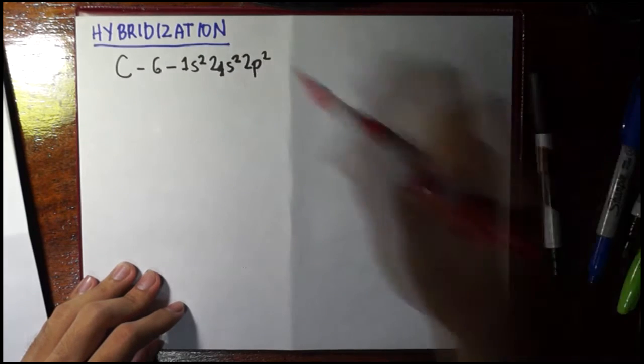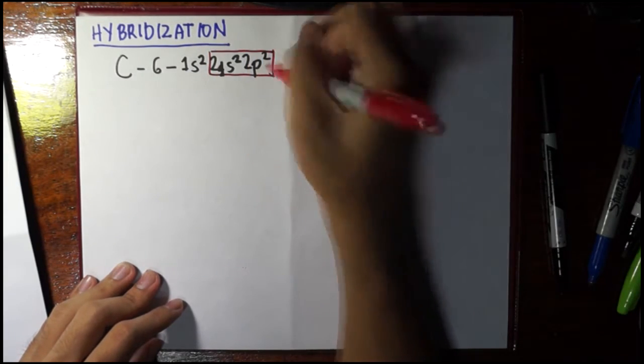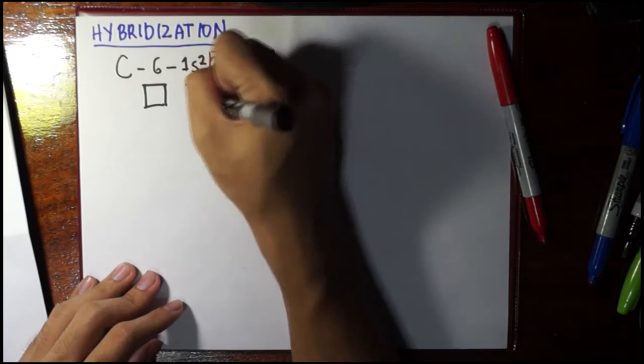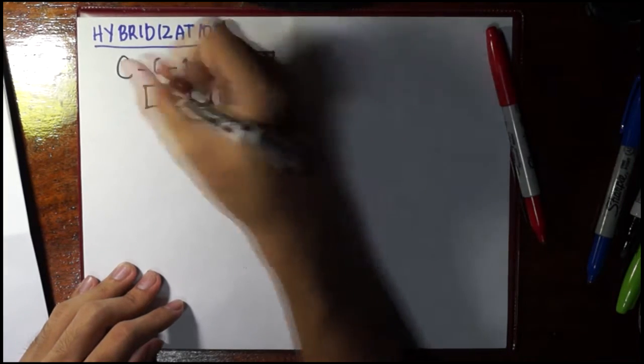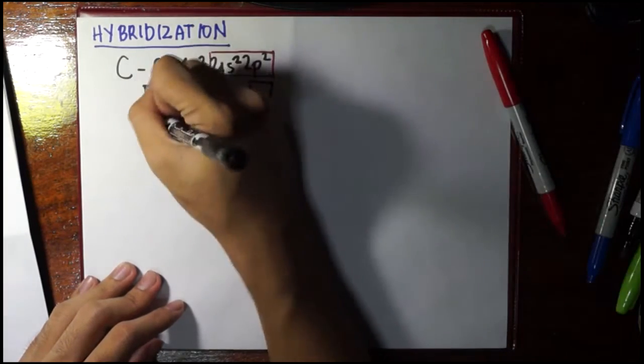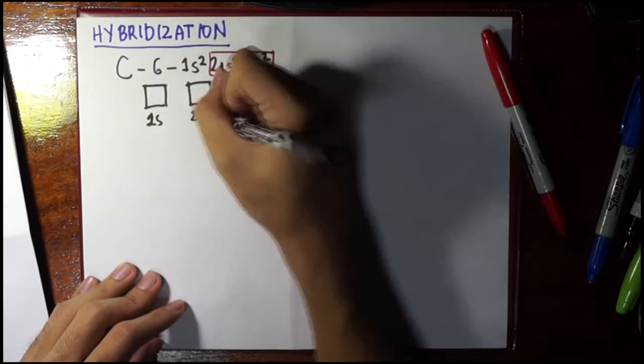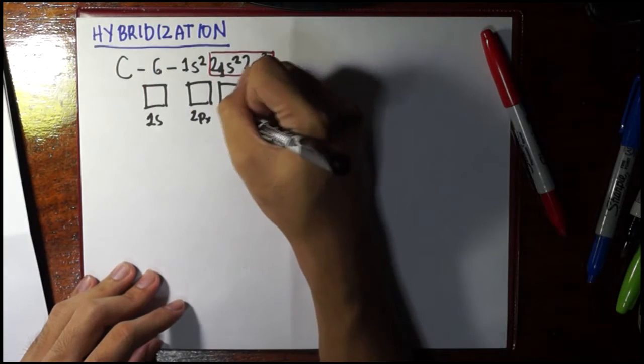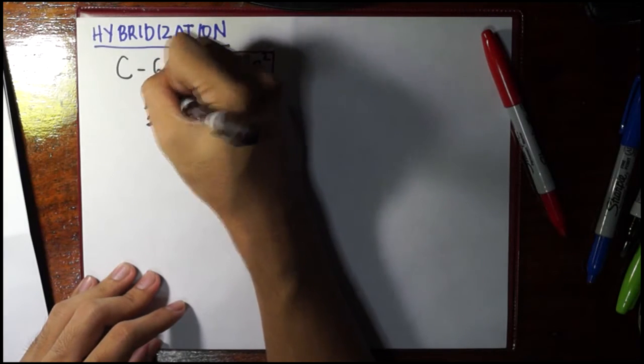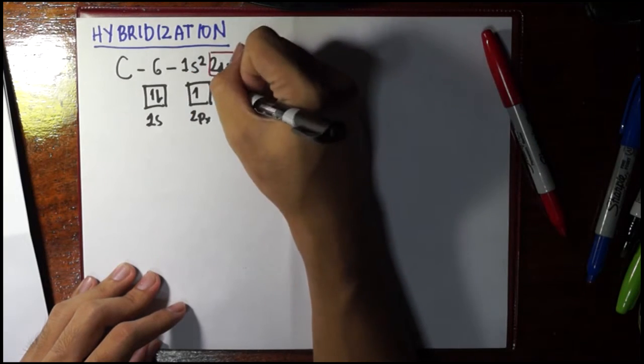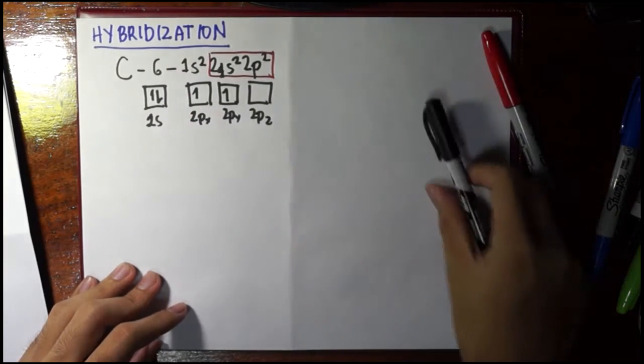So this here comprises the valence. So here we have 1, 2, 3, 4. We have 4 valence electrons, and if we draw it in the box diagram, again, following the Hund's rule, we fill this first. Let's label this first. 1s, 2s I mean. 2px, 2py, 2pz. So we fill first the S, then we put the rest. We have 2 more anyway. So 1, 2. So these are the valence electrons of carbon.